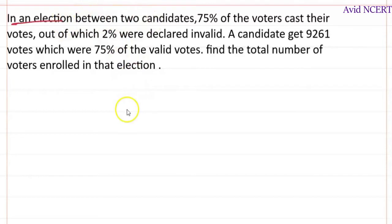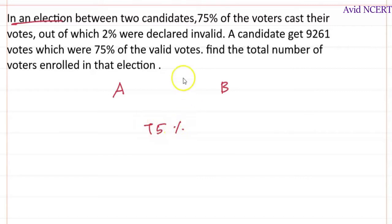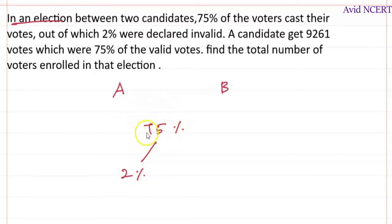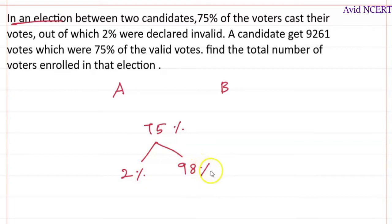So, between two candidates, let's call them A and B. 75% of the voters cast their votes, out of which 2% were declared invalid. So in this 75% of votes, 2% were declared invalid — meaning this 75% is treated as 100% of the cast votes. Out of this, 98% are valid votes.